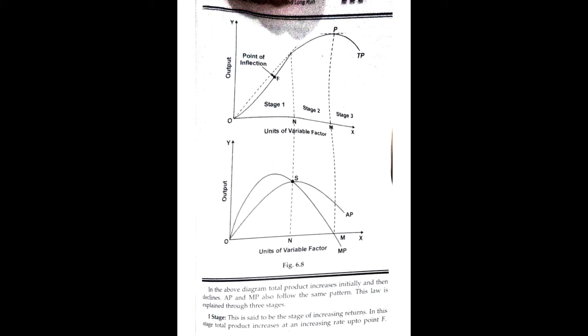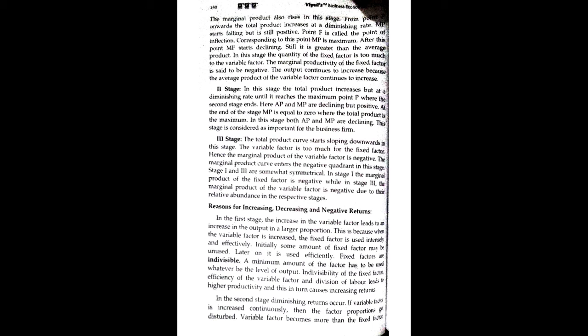The second stage is where the total product increases but at a diminishing rate until it reaches the maximum point P, where the second stage ends. Here AP and MP are declining but still positive. At the end of stage two, MP is equal to zero, where the total product is at its maximum. This stage is considered the most important for the business firm.